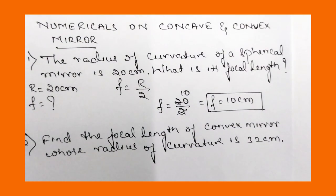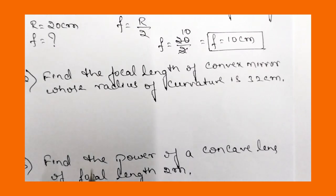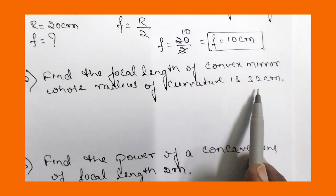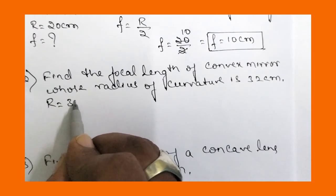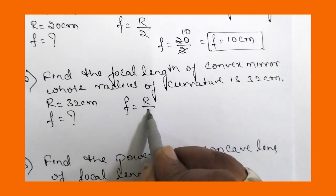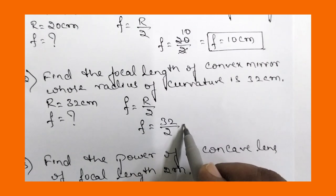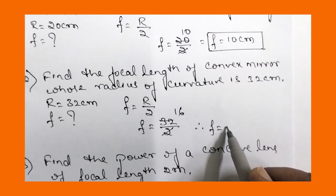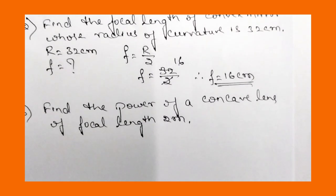Now let us move to the second question. Find the focal length of a convex mirror whose radius of curvature is 32 centimeters. Radius of curvature is 32 cm; we have to find the focal length. Focal length is half of the radius of curvature, so focal length equals 32 divided by 2, which gives us 16 cm. Therefore the focal length of the convex mirror is 16 centimeters.